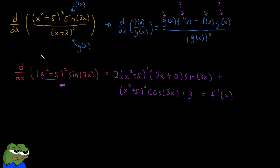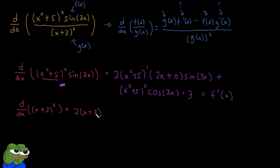Now we continue by taking the derivative of the lower function g(x). The derivative of (x + 3)² equals 2(x + 3) to the first power. We chain rule it because there's a function inside, but in this case the derivative of x is just 1, so we multiply by 1 plus 0, since the derivative of a constant is 0. That's basically our g'(x).